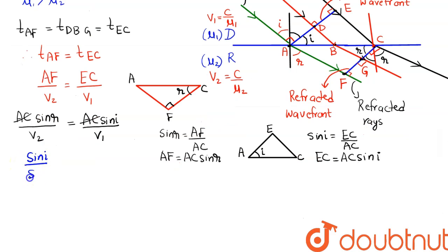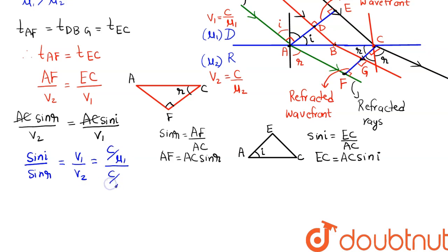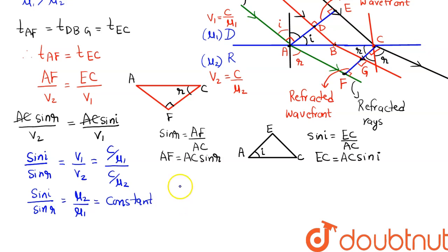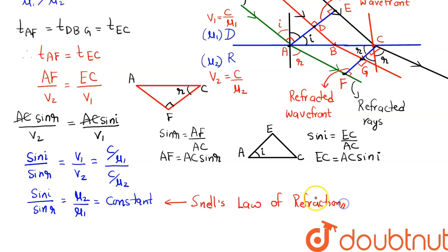Since AC cancels out, we get sine i divided by sine r equals v1 divided by v2. Substituting v1 equals c over mu1 and v2 equals c over mu2, we obtain sine i divided by sine r equals mu2 over mu1, which is a constant known as the relative refractive index of the second medium with respect to the first medium. This constant relation is Snell's law of refraction, which we have thus proved using Huygens' wave theory.